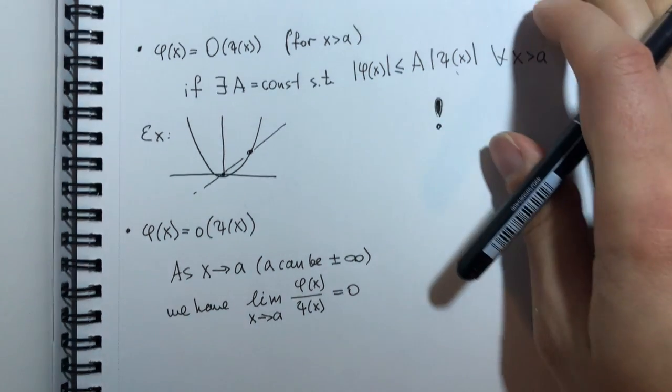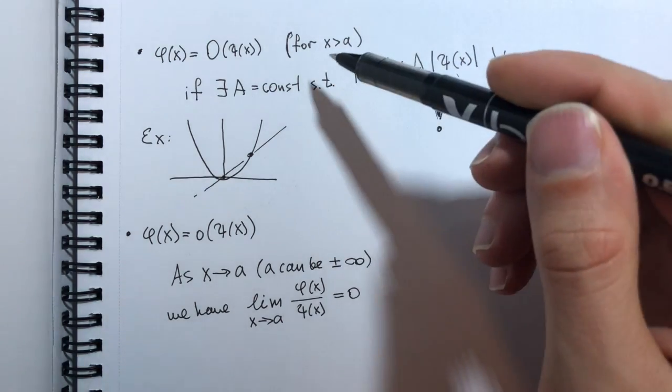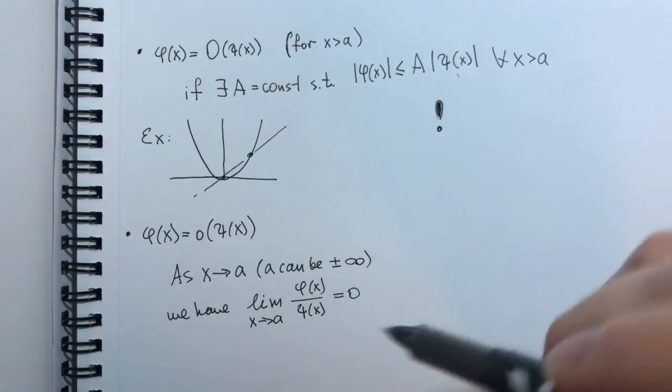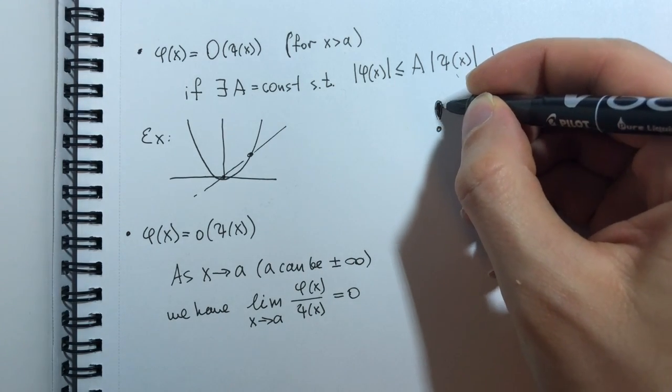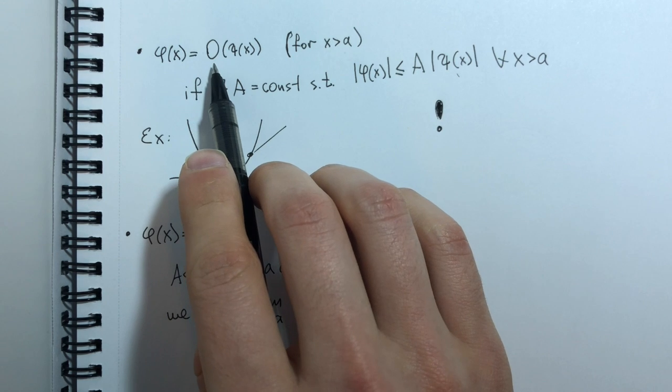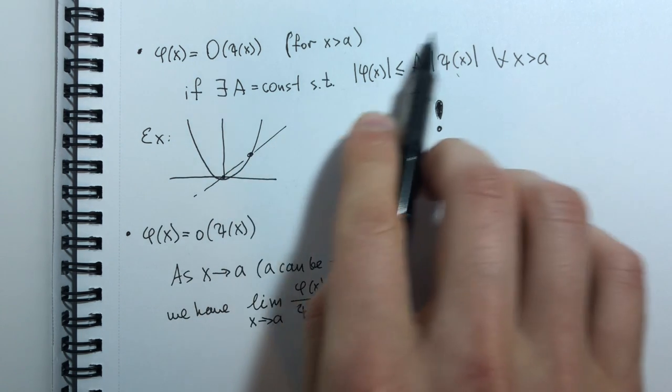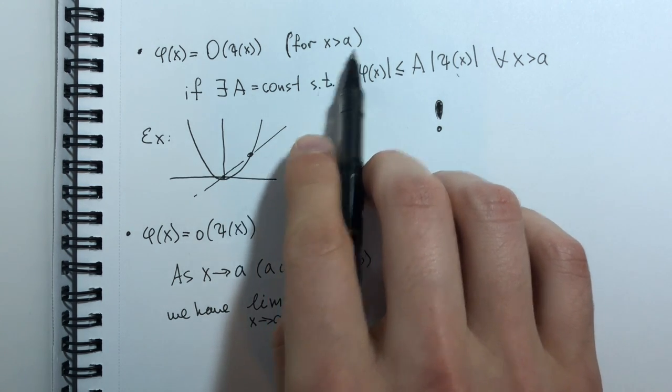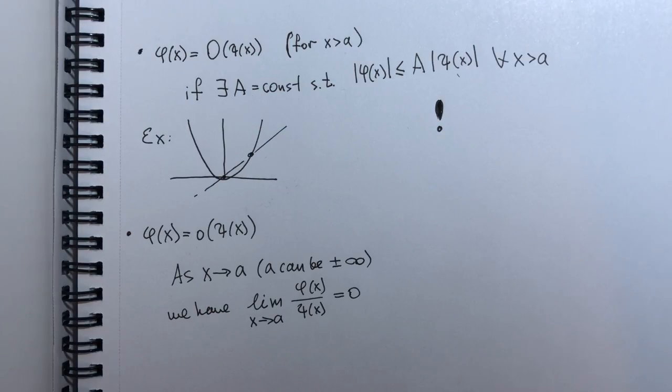Now it's important to understand that big O and small O notation is heavily abused in mathematics. So I chose to define it like this in my video, but in different sources you might meet different definitions. For example, in big O, it might be defined not for all numbers greater than a, but for x tending to A, like here. It may also be defined for a limit. But given my notation,